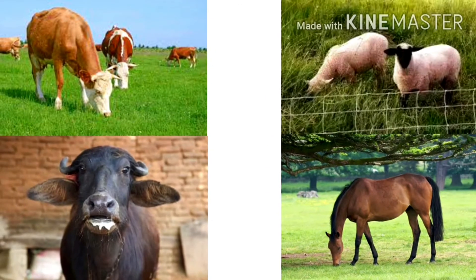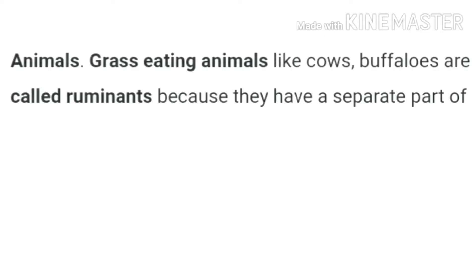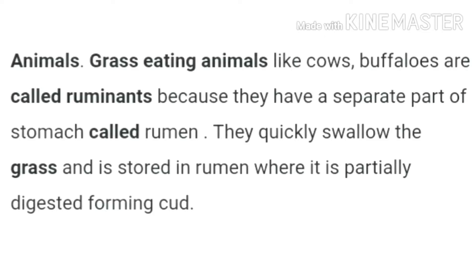Grass-eating animals like cow, buffalo, horse, sheep, and similar hooved animals can swallow food quickly and store it in their stomach, where the food is partially digested. We call this partially digested food the cud.